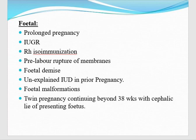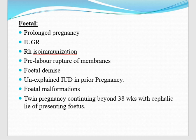In these patients, when the patient is full term at 38 weeks, we have to do induction of labor and deliver. Now fetal indications for induction of labor: prolonged pregnancy — if the patient is post-date and still not in labor, we have to deliver. Then intrauterine growth restriction, Rh isoimmunization, premature rupture of membranes with risk of chorioamnionitis. Fetal demise — intrauterine death with no benefit to remain inside the uterus. Unexplained IUD in prior pregnancy — we deliver before that gestation. Fetal malformations, twin pregnancy at 38 weeks with cephalic lie of the presenting fetus.